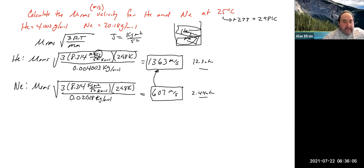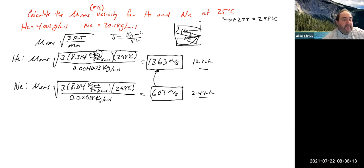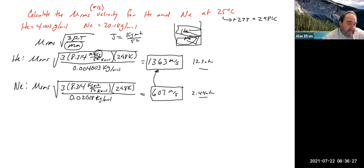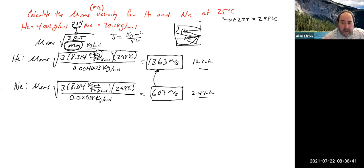For root mean square velocity, be careful with units. Use R = 8.314 J/(K·mol), not 0.08206 L·atm/(K·mol). Most importantly, convert molar mass to kilograms per mole, not grams per mole, so units cancel correctly.